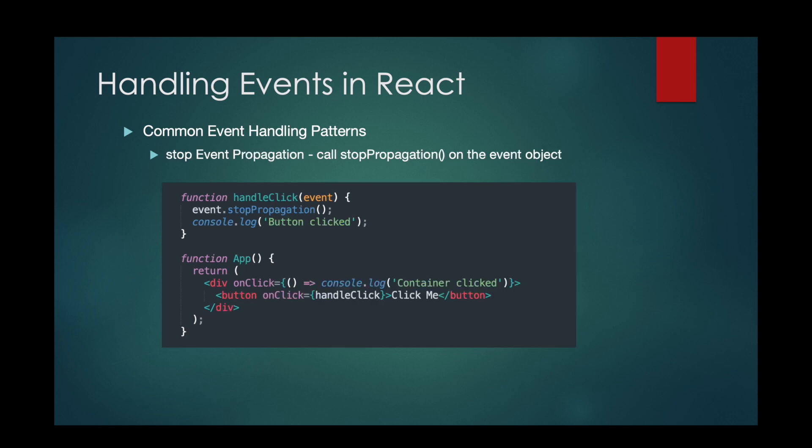Stop Event Propagation: To stop the propagation of an event and prevent it from bubbling up the DOM tree, you can call stopPropagation on the event object. In this example, onClick calls the handleClick function which does the stopPropagation. Clicking on the button will only log 'buttonClick' to the console, as the stopPropagation method prevents the click event from bubbling up to the container div.